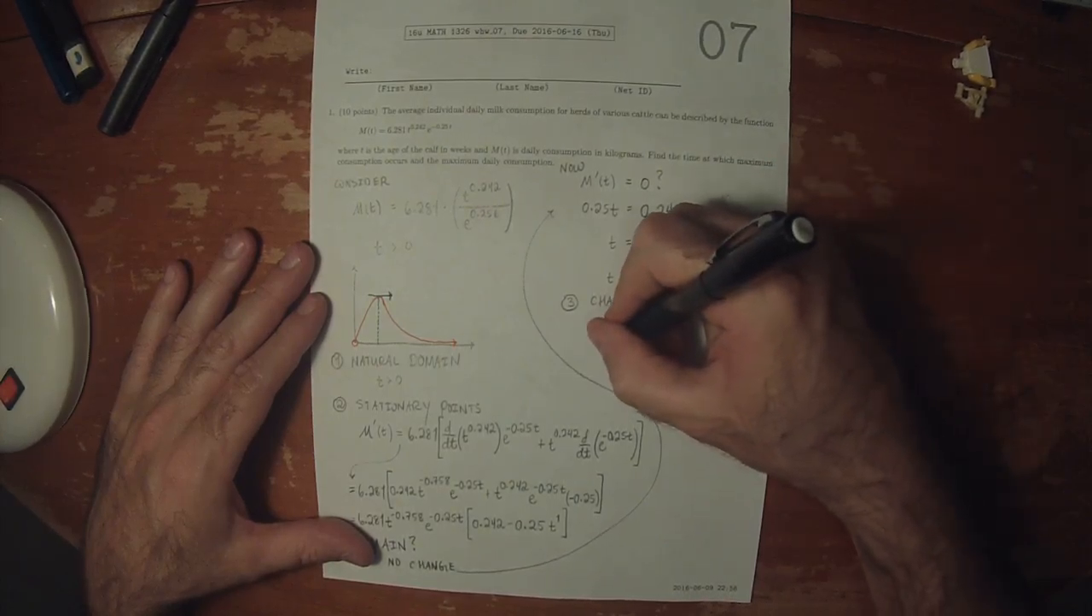So there's just the one point. So now let's make a slope chart. So we found just one point, 0.968. And now we need a value between 0 and 0.968, so how about 0.1? And we need a value to the right of 0.968, so how about 1?